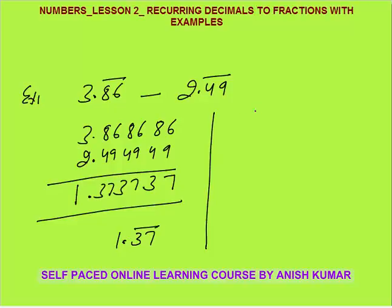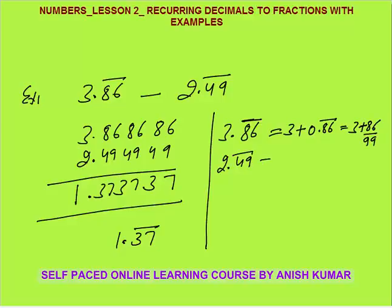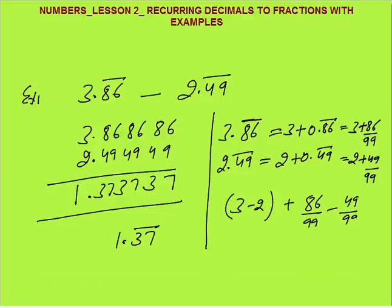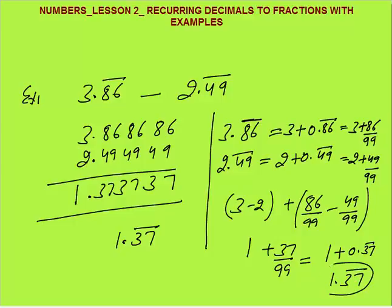The other way: 3.86 bar equals 3 plus 86 by 99, and 2.49 bar equals 2 plus 49 by 99. Subtracting: (3 minus 2) plus (86 minus 49) by 99 equals 1 plus 37 by 99, which equals 1.37 bar. You must know both methods because some exam option choices are given as fractions rather than in bar form.